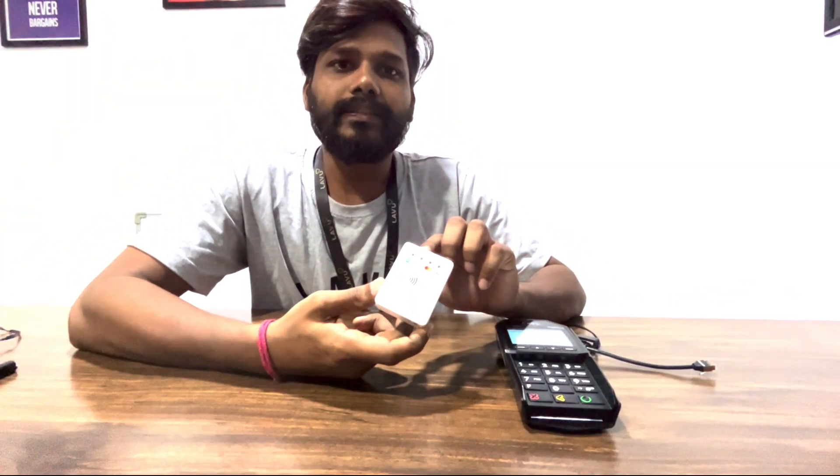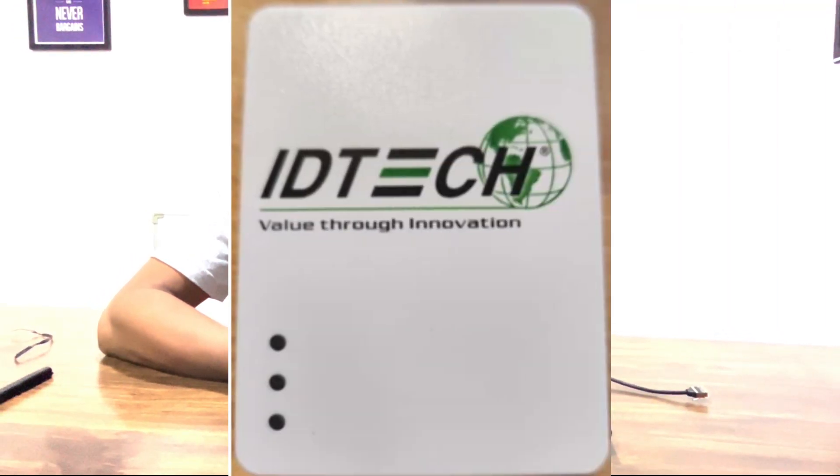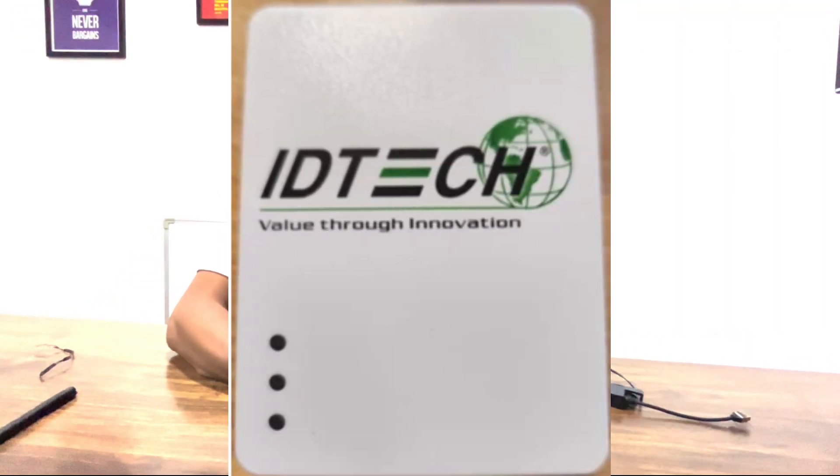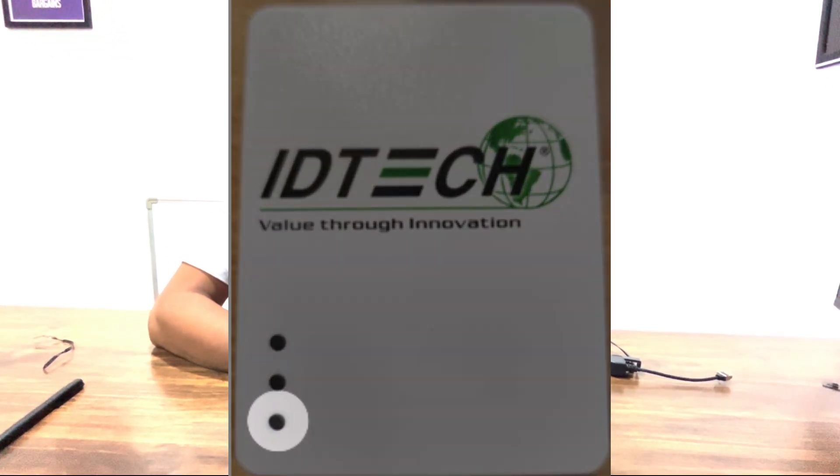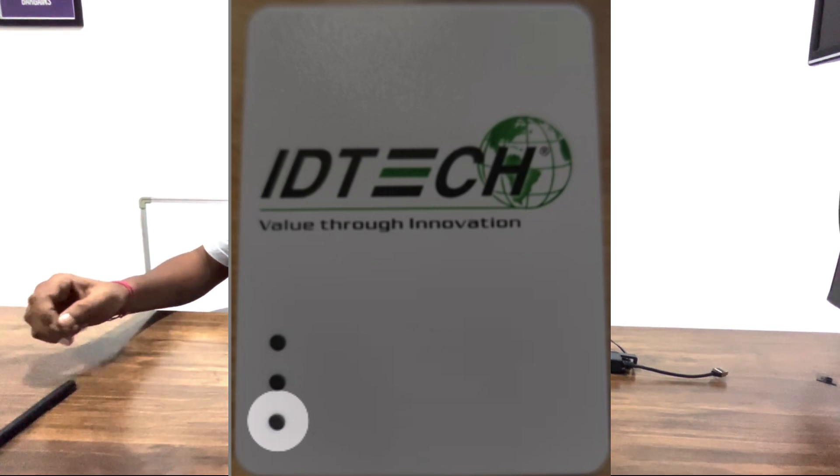The very first thing you should check is the battery level of the card reader. If it is not charged, you will be unable to process transactions with it. Check the lights on the front of the device. If the bottom light is flashing orange, it means the battery is about to run out and you should charge the card reader immediately.